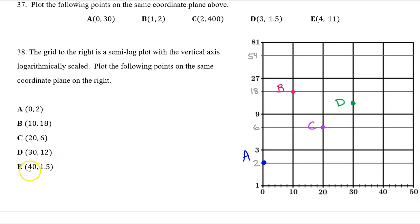And then finally, point E is (40, 1.5). So here's 1, and here's 2. Like we have practiced, we now know that 1.5 will not be right here in the middle. It'll actually be about two-thirds of the way up. So make sure you put your point E closer to 2 than you do to 1. So point E will be about here, about two-thirds of the way up.